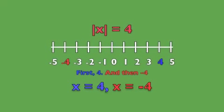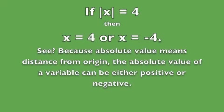The second one is negative four, which is also four units away from zero on the number line: negative one, negative two, negative three, negative four. So the absolute value of x could also be equal to negative four. Because absolute value means distance from origin, the absolute value of a variable can be either positive or negative.